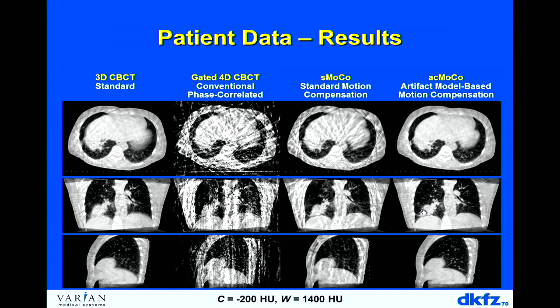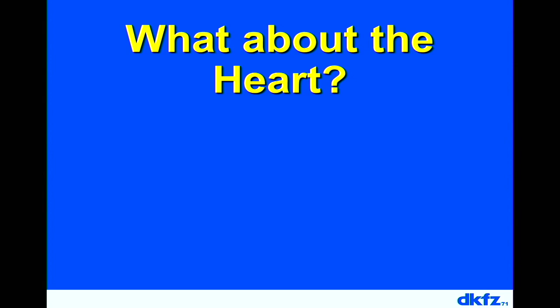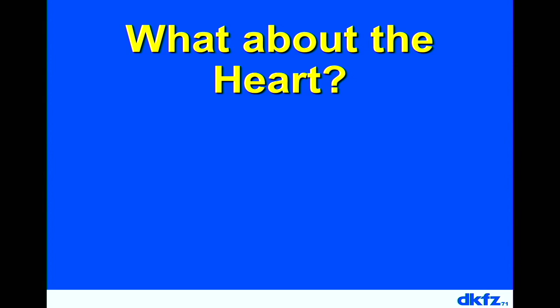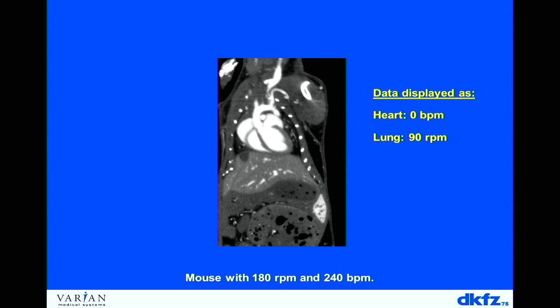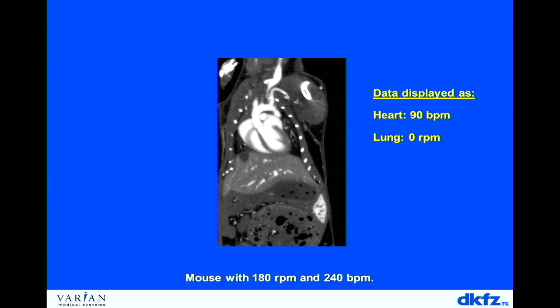Comparing results: gated reconstruction with artifacts, then standard motion compensation, then the cyclic artifact motion compensation — almost all artifacts are gone. Lung vessels and tumors are now clearly visible. This demonstrates the benefit of adding CT know-how to the registration approach. We also applied this to a mouse scan — with a heart rate of 280 beats per minute and 150 respirations per minute — to develop the method toward patient imaging. The mouse dataset is essentially five-dimensional: volumetric data for any cardiac phase and any respiratory phase.